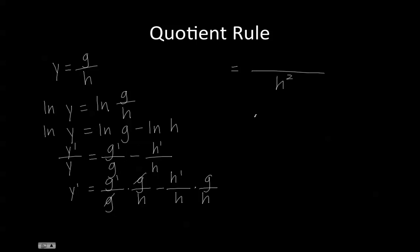We multiply the numerator and denominator by h, giving us g prime h minus h prime g over h squared, and that equals the derivative of g over h.